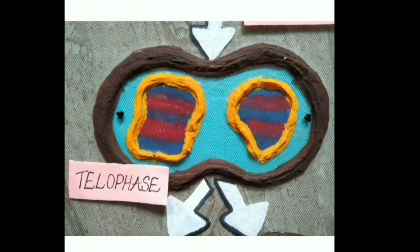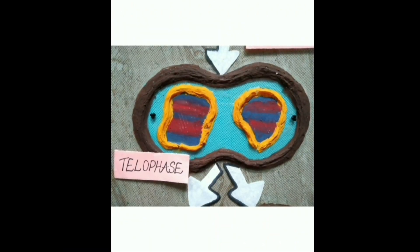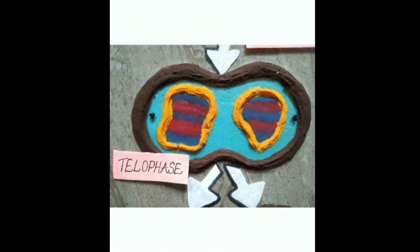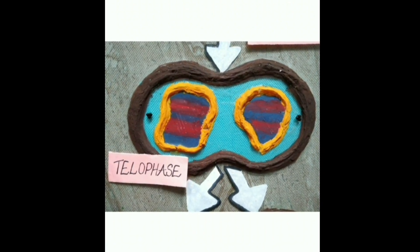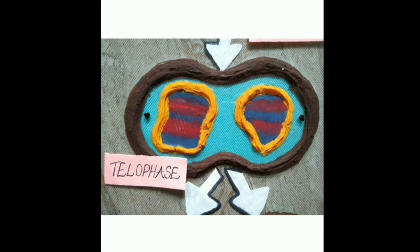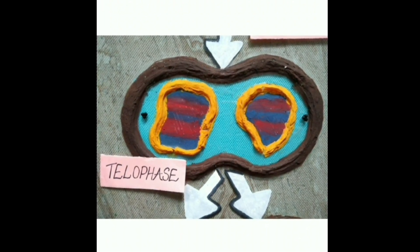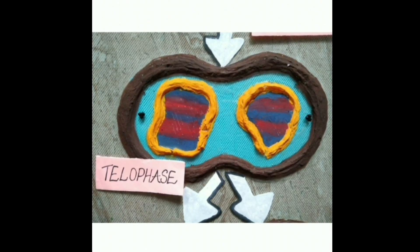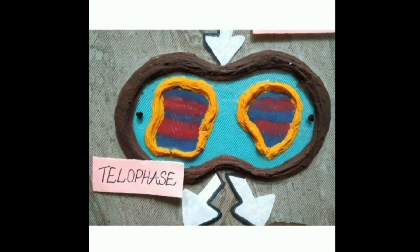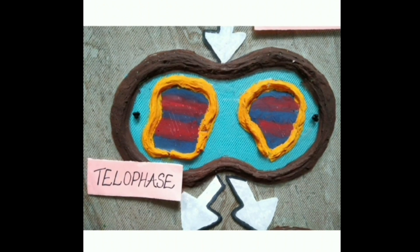The next is telophase, the final stage of karyokinesis. Here, chromosomes cluster at opposite spindle poles, then condense and lose their individuality. A nuclear envelope develops around the chromosome cluster at each pole, forming two distinct nuclei. The Golgi complex, endoplasmic reticulum, and nucleolus all reappear.